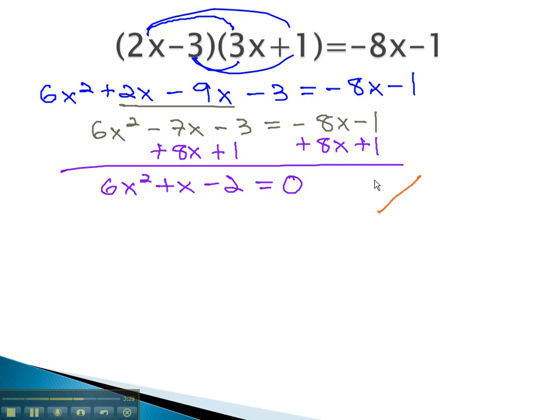Now that it equals zero, we're ready to factor using the AC method, multiplying to negative 12 and adding to 1. 4 and negative 3 make this work. There are two ways to multiply to 6x squared. 6x times 1 will not work because neither of our numbers are divisible by 6, so we must use 2x times 3x.